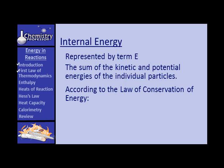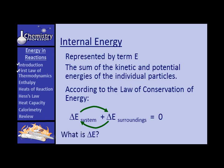Internal energy E is the sum of kinetic and potential energies of the individual particles. According to the law of conservation of energy, the quantity of energy in the universe is constant. Therefore, any change in energy of the system plus the change in energy of the surroundings equals zero — you can't gain or lose energy overall; it has to be interchanged. Delta E is the final energy minus the initial energy.